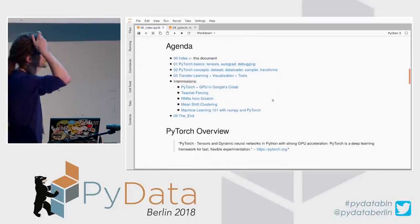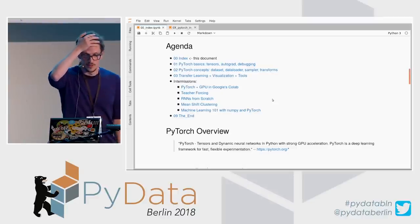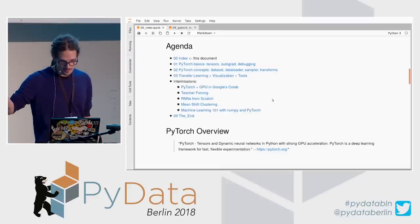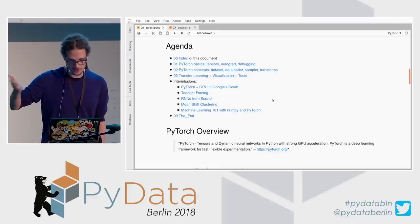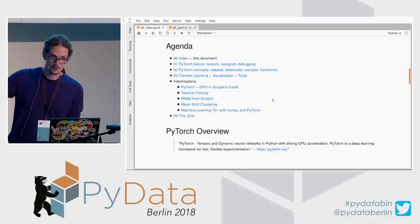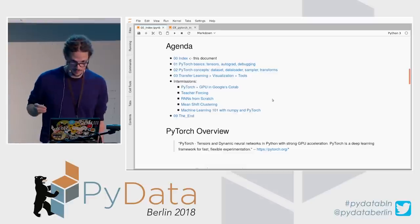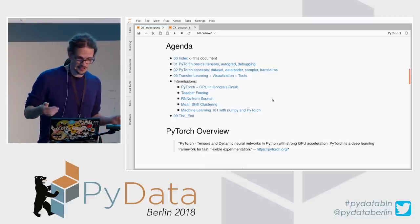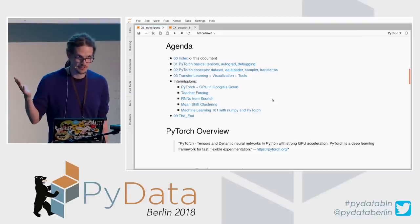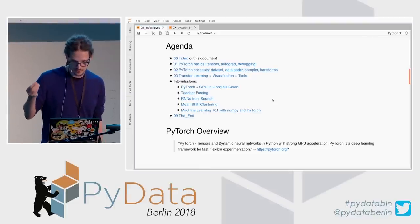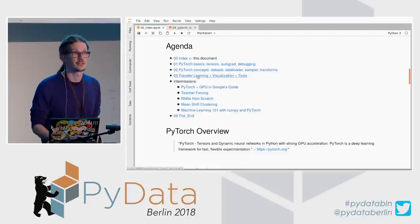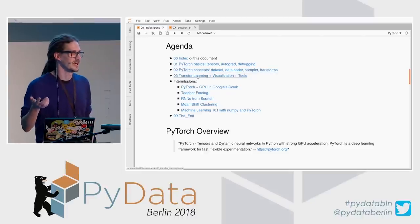So this is what we're going to talk about. We'll cover the basics of machine learning — tensors — then briefly discuss autograd or automatic differentiation, then debugging in PyTorch, which is amazing. We'll cover more concepts: datasets, data loaders, samplers, and transforms, which are a nice abstraction to get work done. In the last step, we'll do transfer learning, visualize everything, and use some other libraries.